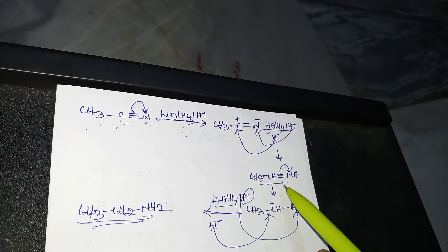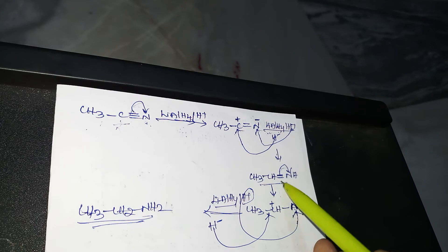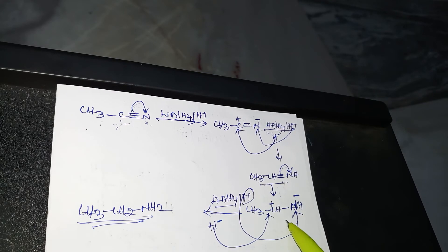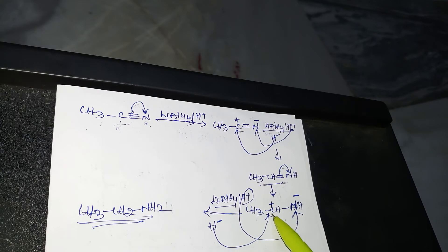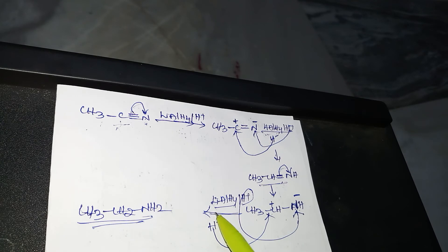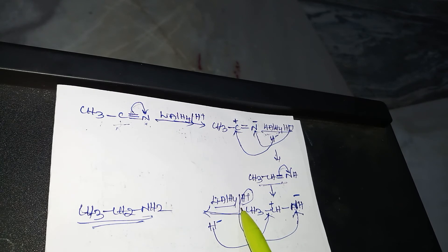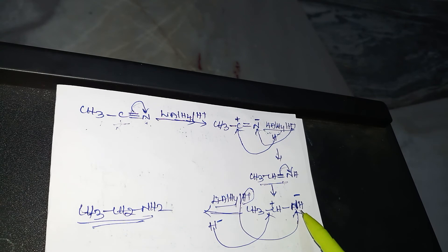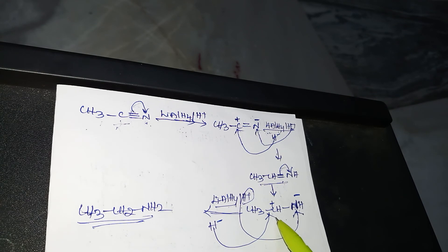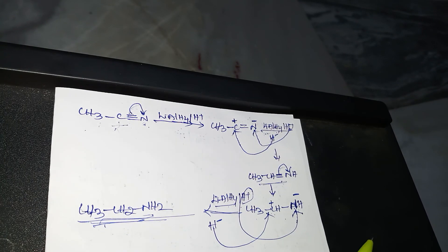This gives the first intermediate product. Again, this double bond shifts towards the right-hand side — the double bond becomes a single bond — giving CH3 CH+ then NH minus. Again, one more LiAlH4 is used for reduction: H+ goes to the NH minus group side and H minus goes to the CH+ side. The final product is CH3CH2NH2 — a primary amine.